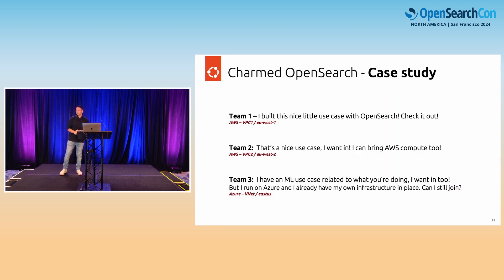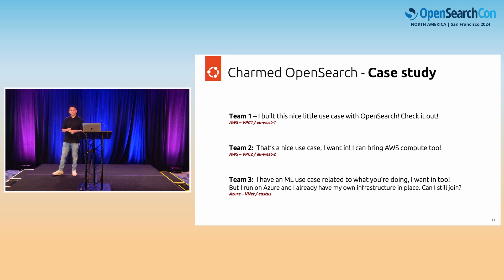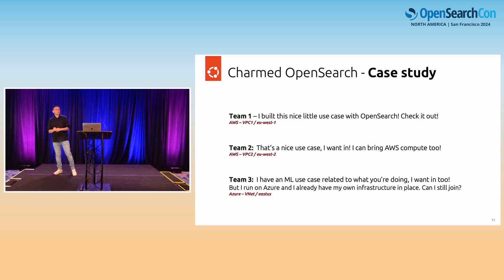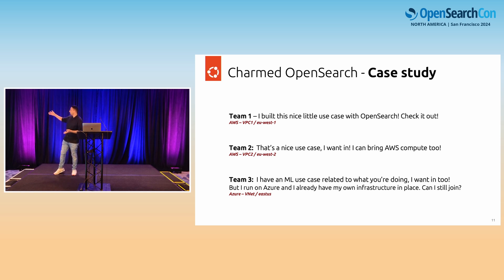Now a small case study to show the scale and value proposition of this operator: diversity in the deployment topology and its cloud-agnostic nature. Team A built a small use case with very small compute using OpenSearch, didn't expect scale or growth, just a nice little use case. They deployed their application in AWS in their own VPC in region EU West 1.